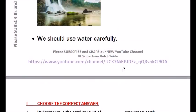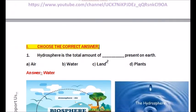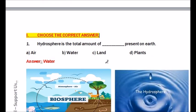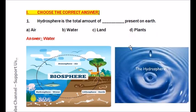Roman numeral I: Choose the correct answer. Question number one: Hydrosphere is the total amount of dash present on earth. Options are: air, water, land, plants. The answer is water. Hydrosphere is the total amount of water present on the earth.